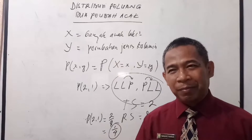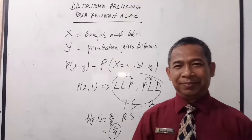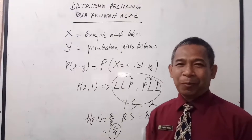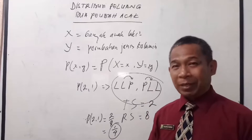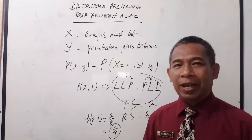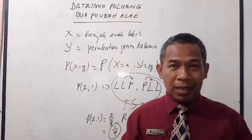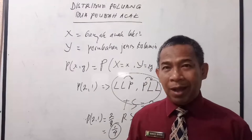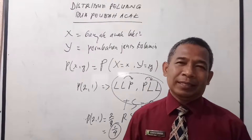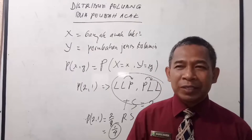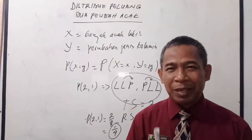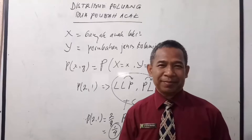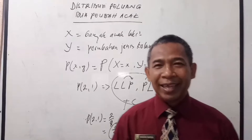Ini cara menentukan distribusi atau peluang dari dua peubah acak. Ini untuk contoh realnya, yaitu kalau kita hubungkan dengan peluang untuk satu peubah acak yang sudah kita pelajari. Untuk menentukan peluang gabungan dari dua buah peubah acak, Anda harus tahu apa peubah acak X dan peubah acak Y-nya. P(X,Y) yang menyatakan peluang dari gabungan dua peubah acak disebut fungsi peluang gabungan.